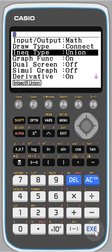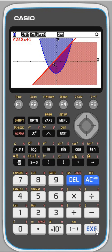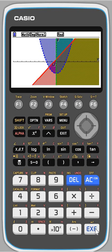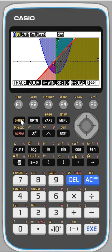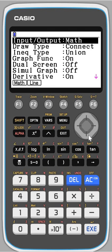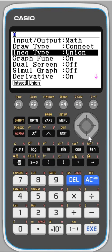I'll just show you what happens with union. So union overlaps and then it's really hard to see. So we go shift and menu for setup. You go down until inequality type and change it to intersection.